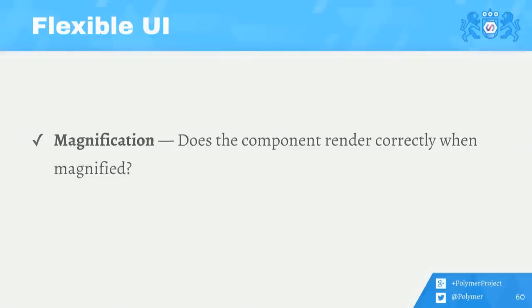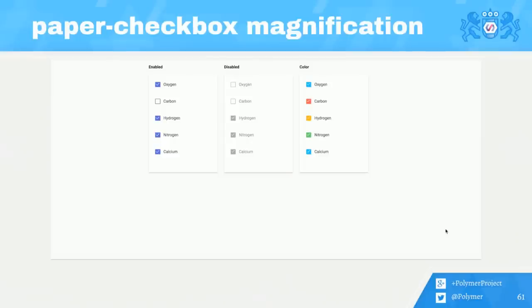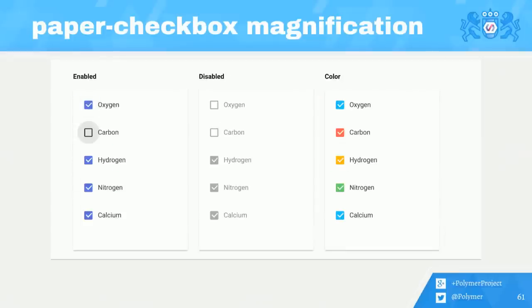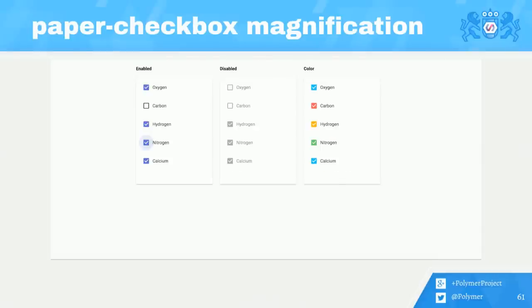Lastly, we want to make sure magnification is working smoothly. If you need to zoom in on the page, all content should still render correctly. Here we can see the paper checkbox — using Command Plus on Mac or Control Plus on Windows/Chrome OS to zoom all the way in — and the formatting still stays really well intact. The focus still remains in the right place. We definitely encourage you to quickly check how your elements, sites, and apps are rendering when magnified or zoomed in.